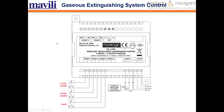For gas extinguishing system control, the first-level alarm, second-level alarm, and failure conditions of the gas extinguishing system can be monitored with switch monitoring modules. In this example, IO modules with four inputs and two outputs are used to monitor the first-level alarm, second-level alarm, and fault information from the gas panels.